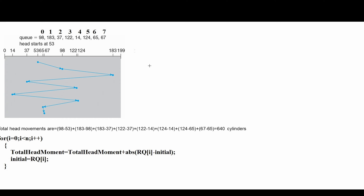This is FCFS — First Come, First Serve. The first request is RQ[0] which is 98. So from the initial position 53, we have to visit 98. We calculate this head movement using the ABS function: total head movements = ABS(RQ[i] - initial). This always gives a positive value — even if you compute 53 minus 98, the ABS function ensures a positive result.